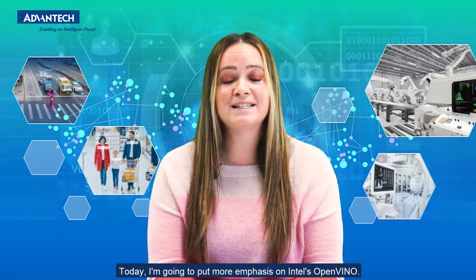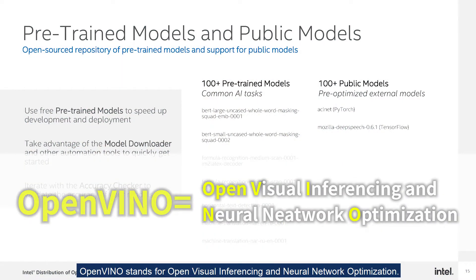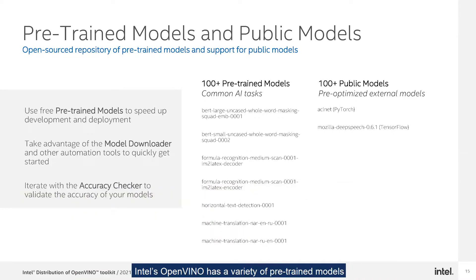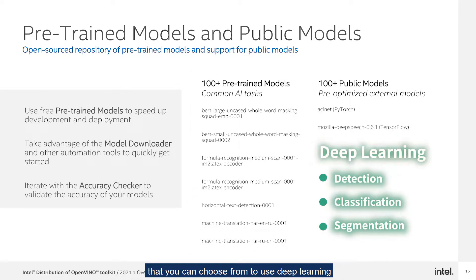Today, I'm going to put an emphasis on Intel's OpenVINO. OpenVINO stands for Open Visual Inferencing and Neural Network Optimization. Intel's OpenVINO has a variety of pre-trained models that you can choose from to use deep learning for detecting, classification, segmentation, and more.